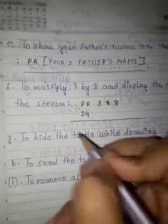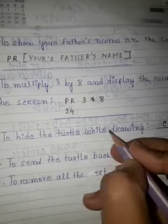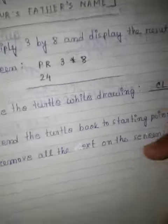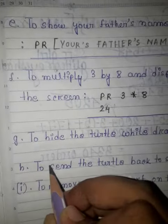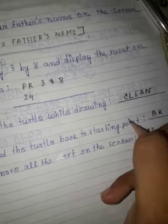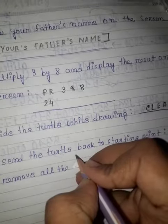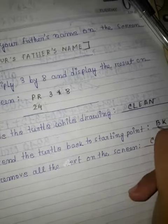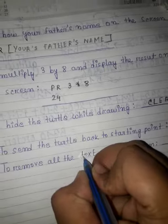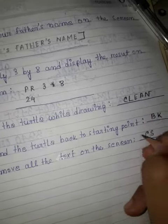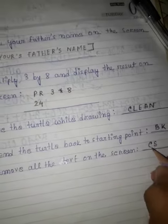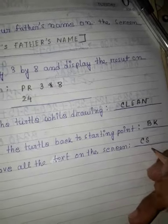g) To hide the turtle while drawing — the command is HT. h) To send the turtle back to the starting point — the command is BK. i) To remove all the text on the screen — the command is CS.